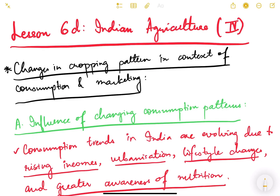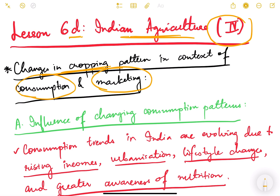Hello friends and welcome to lesson number six. We are studying Indian agriculture — this is the fourth video of this particular lesson. In this video we are going to study an important topic: what are the changes in cropping pattern in the context of changing consumption and marketing conditions in our country. We have seen what cropping patterns are and how they evolved historically, but here we'll focus specifically on changes in cropping pattern because of changes in consumption pattern and marketing conditions.